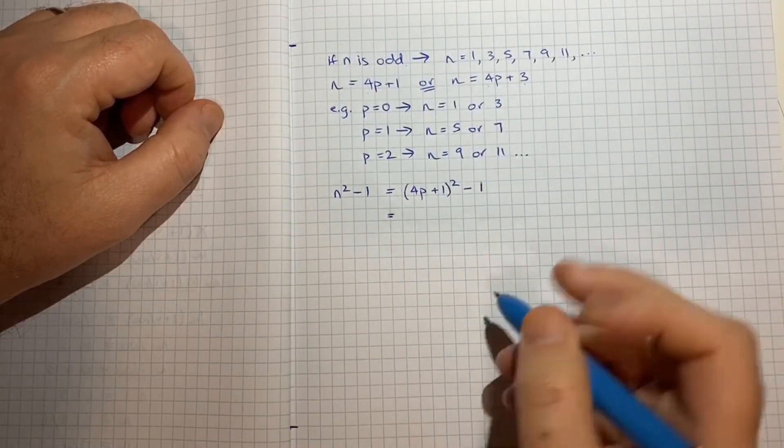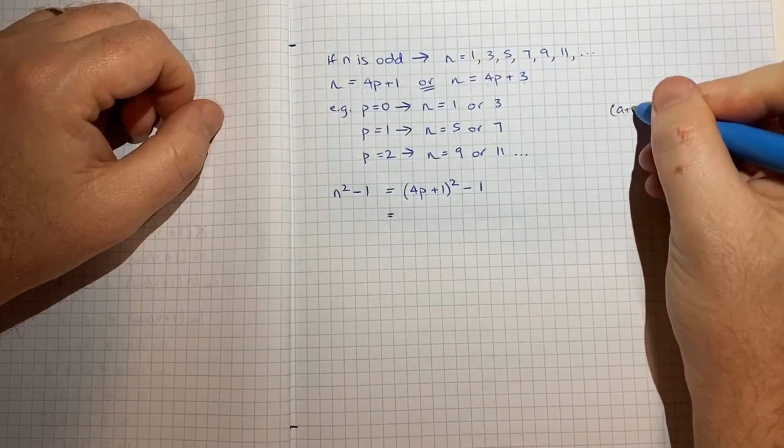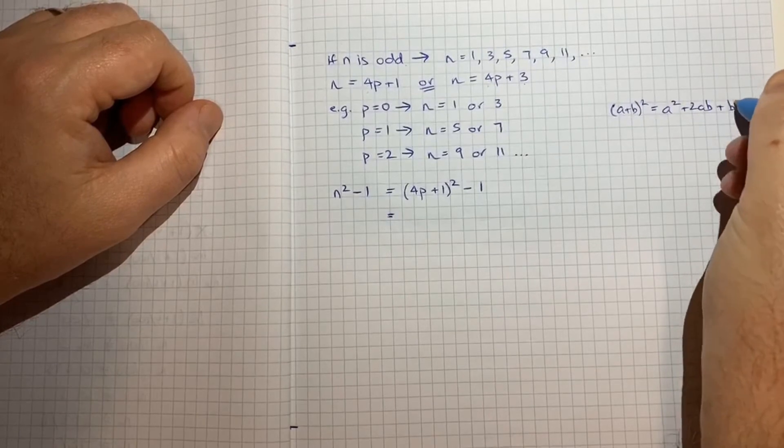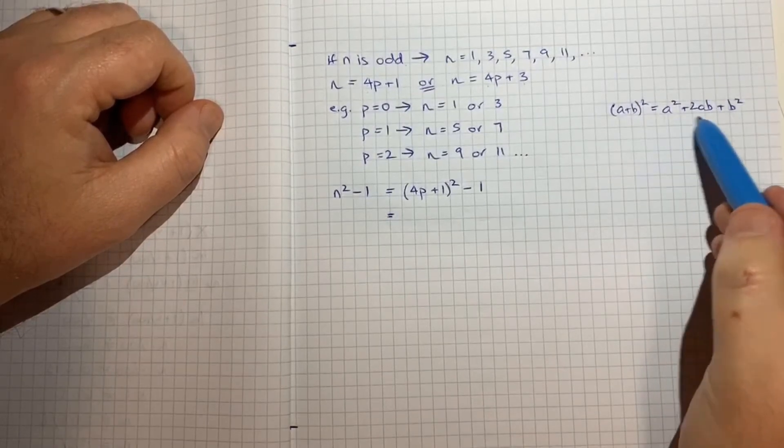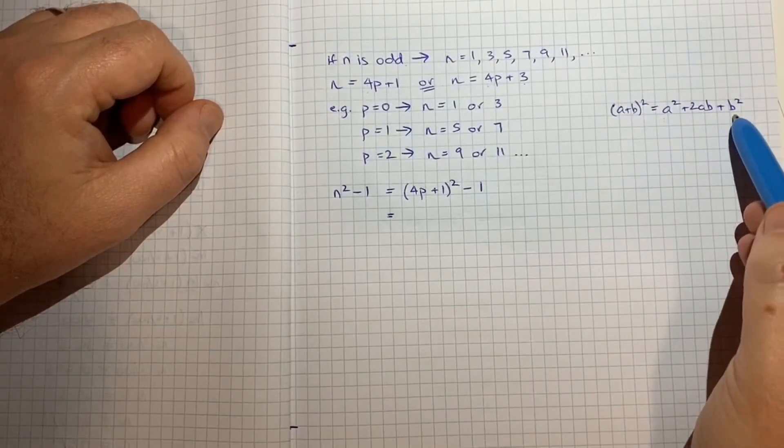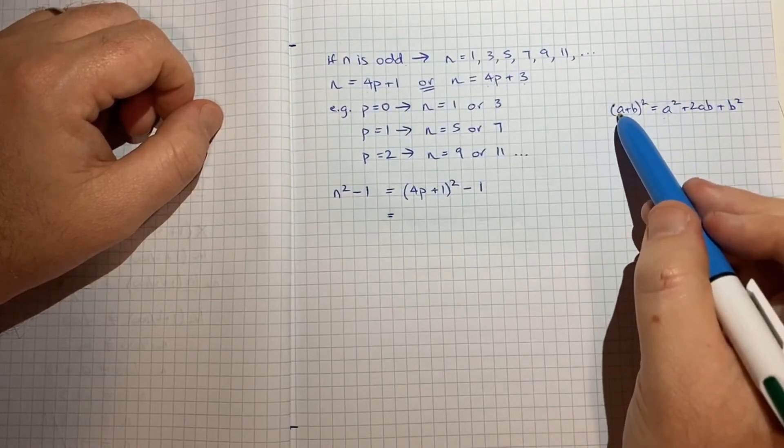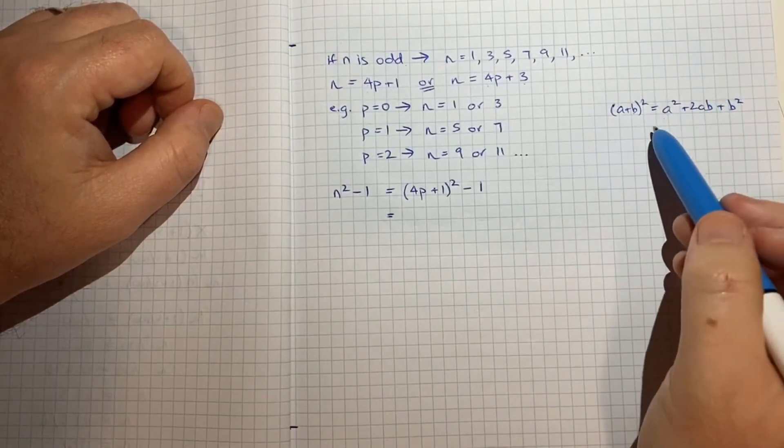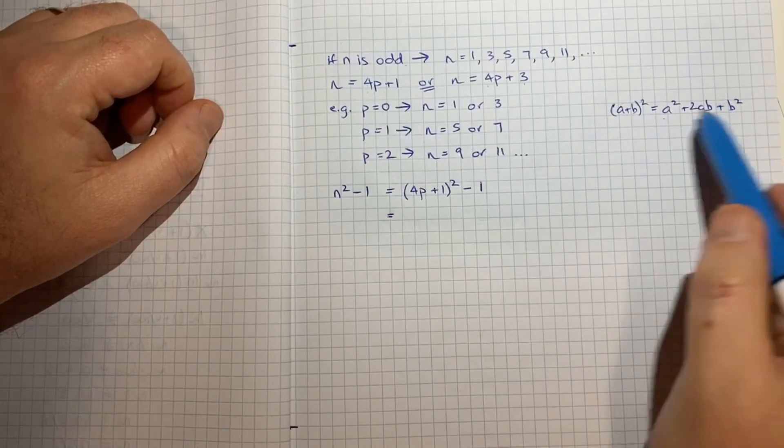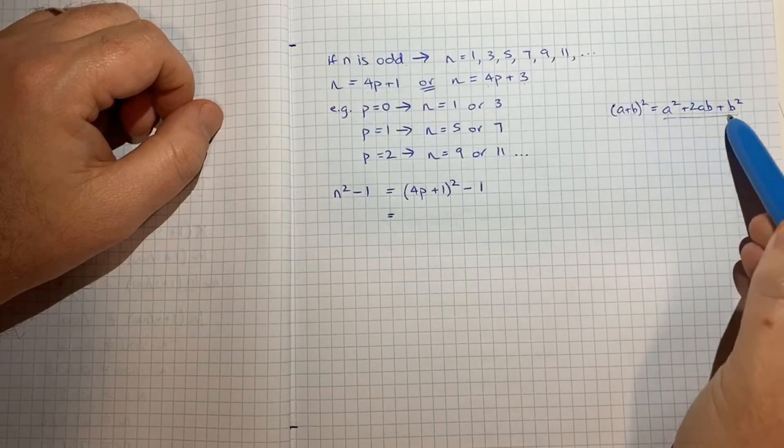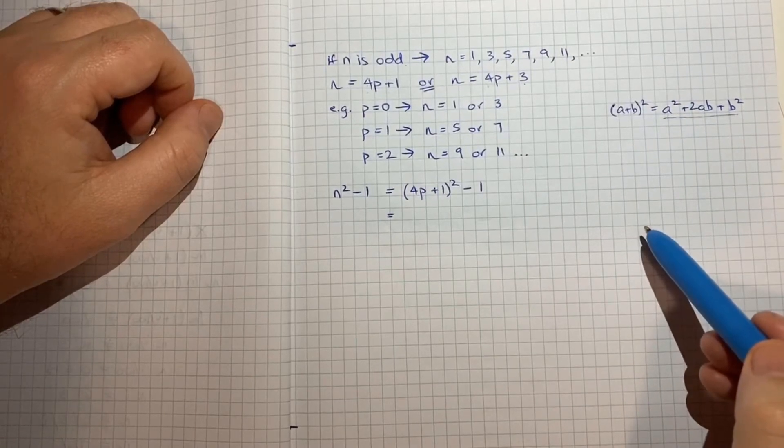So hopefully you know that if we've got a plus b squared that's equal to a squared plus 2ab plus b squared. So that's just a rule that hopefully you're familiar with. It's actually not too hard to prove if you just wrote out a plus b times a plus b and expanded it. But if you're trying to prove something like this chances are I'm assuming you're aware of this expansion.